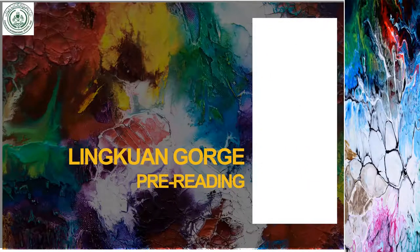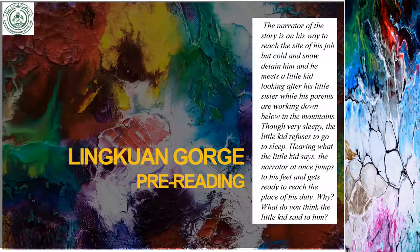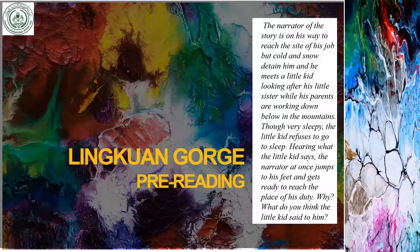The pre-reading of Linguine Gorge: the narrator of the essay is on his way to reach the site of his job, but cold and snow detain him. He meets a little kid looking after his little sister while his parents are working down below in the mountains. Though very sleepy, the little kid refuses to sleep. The narrator jumps to his feet and gets ready to reach his duty. What did the little kid say? This is all in our reading selection.